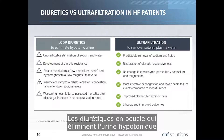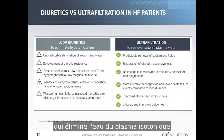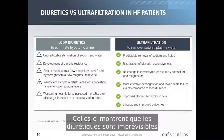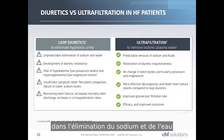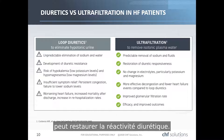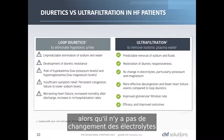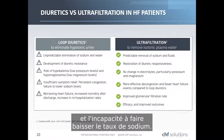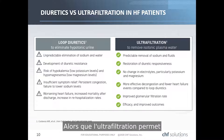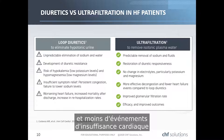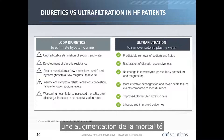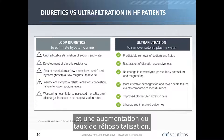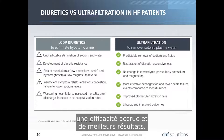Loop diuretics, which eliminate hypotonic urine, have been compared with ultrafiltration, which removes isotonic plasma water, in several clinical studies. Diuretics are unpredictable in the elimination of sodium and water, whereas ultrafiltration is predictable. With loop diuretics, you may have development of resistance, whereas ultrafiltration can restore diuretic responsiveness. Diuretics carry a risk of hypokalemia and hypomagnesemia, whereas there is no change in electrolytes with ultrafiltration. Diuretics show insufficient symptom relief with persistent congestion, while ultrafiltration shows more effective decongestion, improved GFR, and improved outcomes compared to loop diuretics.